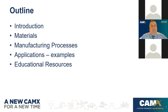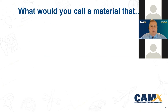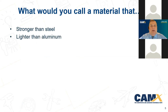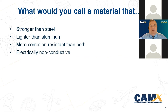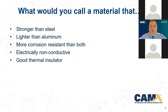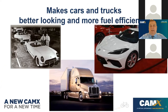The outline of my presentation covers five key areas: introduction, an overview of materials, manufacturing processes, applications and examples, and educational resources you can refer to after this presentation. So what would you call a material that is stronger than steel, lighter than aluminum, more corrosion resistant than both, electrically non-conductive, a good thermal insulator, and has adjustable material properties? I would call that composites.